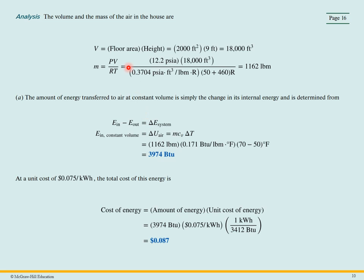So the volume is the floor area times the height. So we can calculate that. We can use the gas law to find the mass, PV over RT. T here has got to be in absolute, so that's Rankine. So we have to add 460 to the 50 to get it to Rankine.